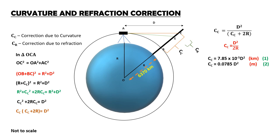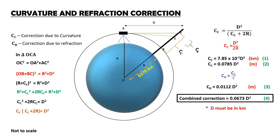Generally, refraction correction is taken as CR is equal to 1/7th of curvature correction. So, CR is equal to 0.012 D square. Finally, combined correction is 0.0673 D square.